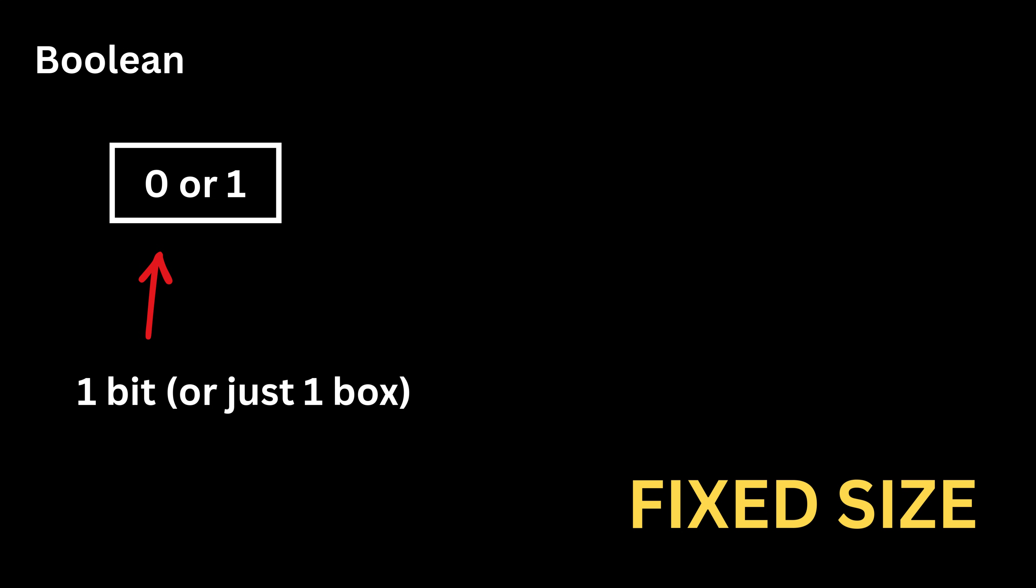A boolean value is even simpler, since it only needs to represent two possibilities, true or false. The computer can store it using just a single bit. One bit is enough because it can hold either zero or one, and we can map zero to false and one to true. This is why boolean operations are extremely fast.